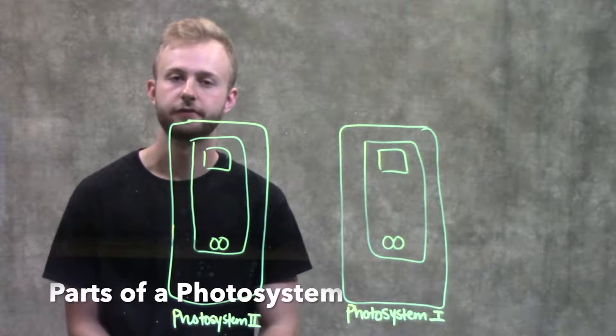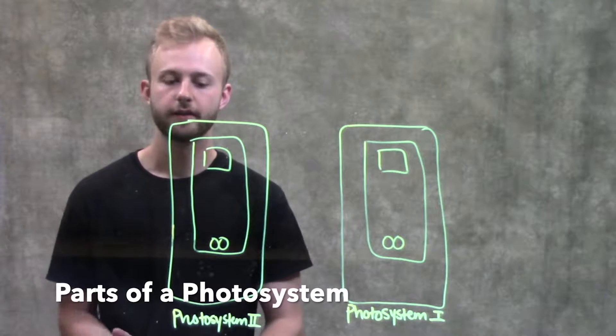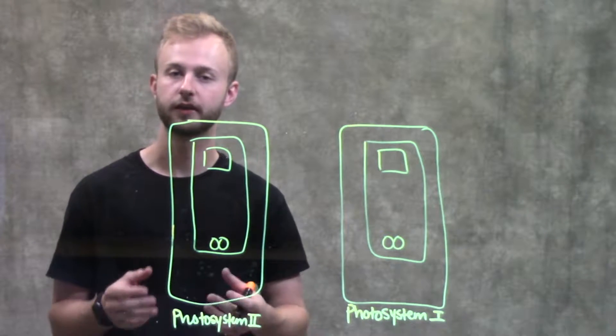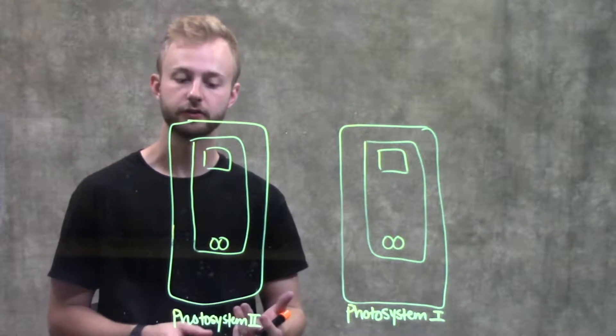This video is going to be about the parts of a photosystem. When we're looking at photosynthesis, the photosystems are really where we capture all the energy that we're going to need to be able to make glucose.